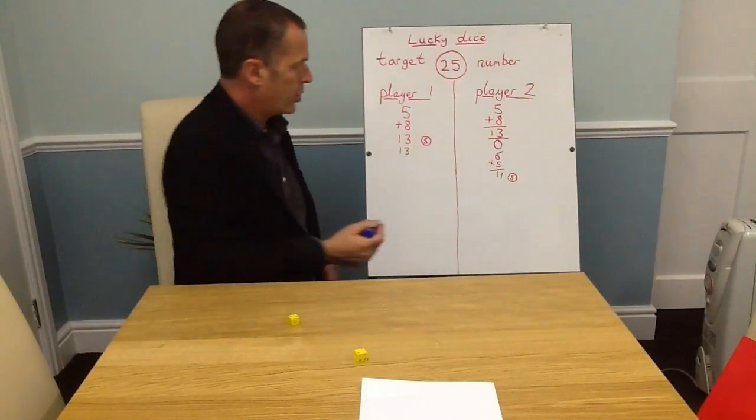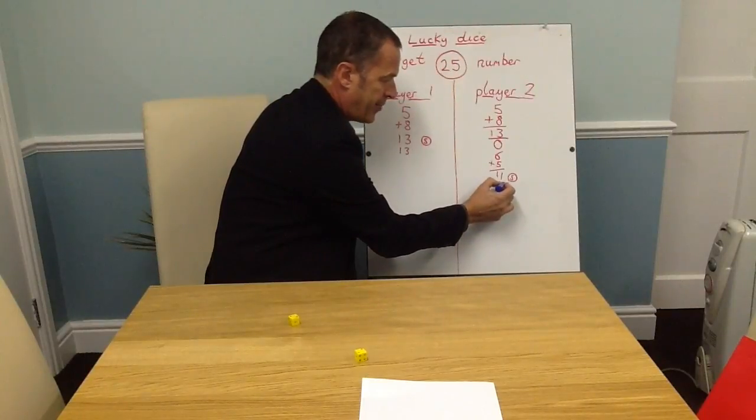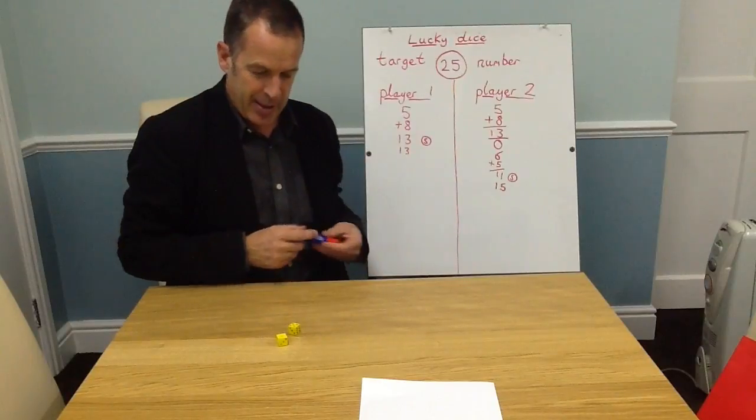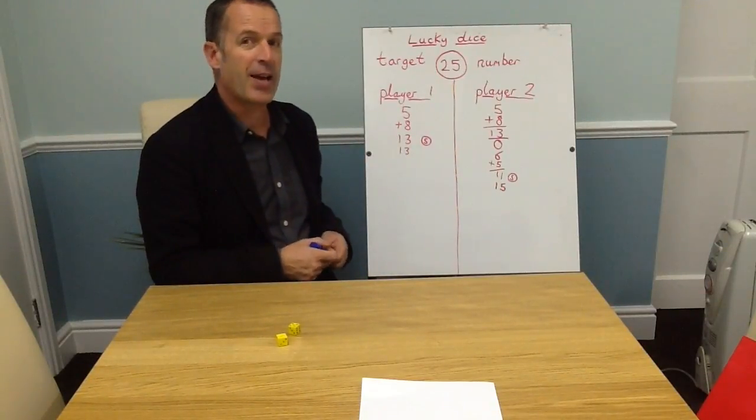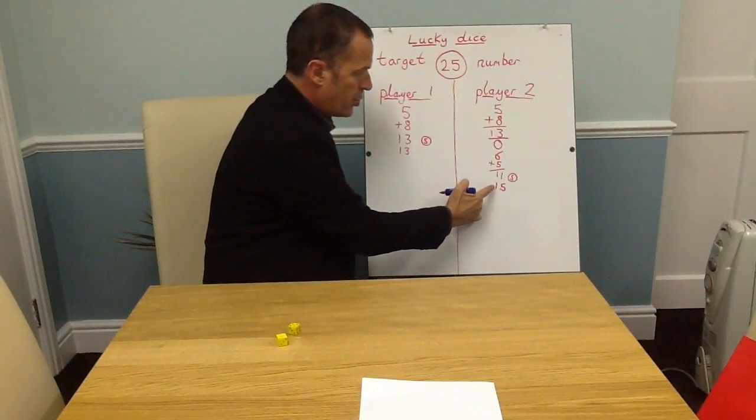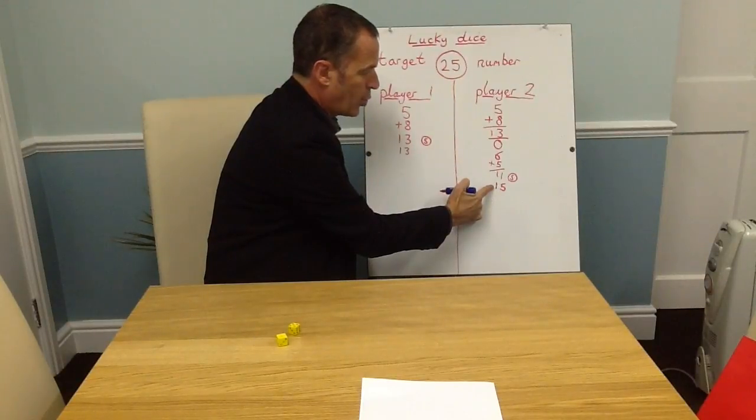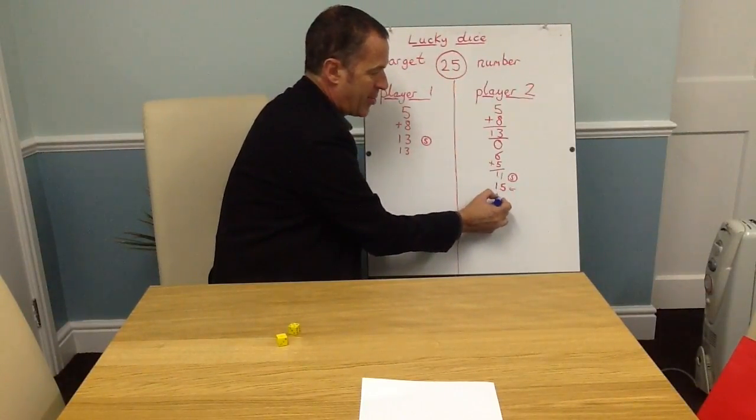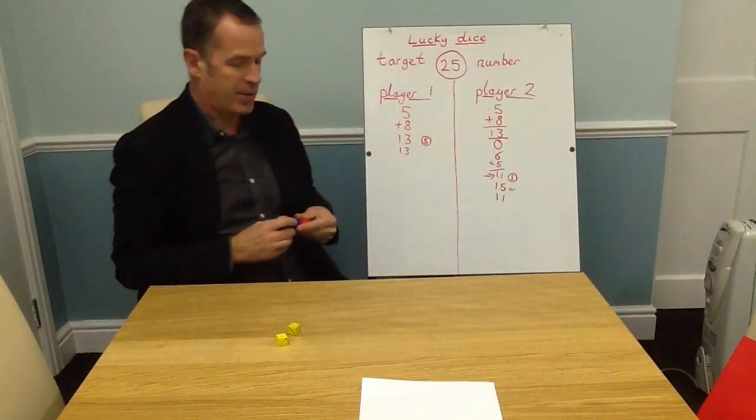Oh dear. I've got a five and a one. So I lose my score for that turn which is fifteen, and I go back to eleven.